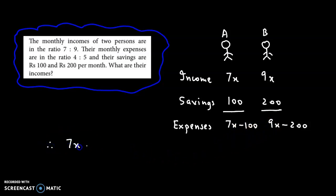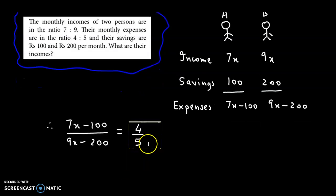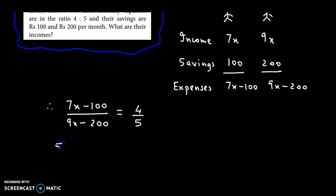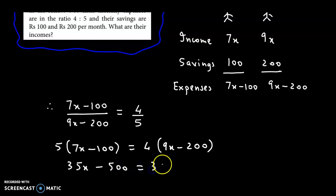Therefore, (7x minus 100) over (9x minus 200) equals 4 over 5. Cross multiplying: 5 times (7x minus 100) equals 4 times (9x minus 200). So 35x minus 500 equals 36x minus 800.